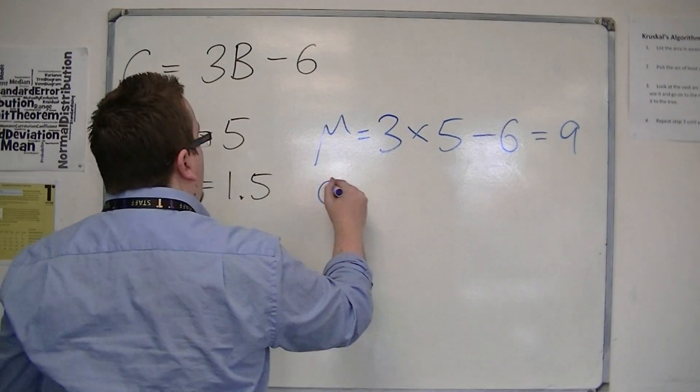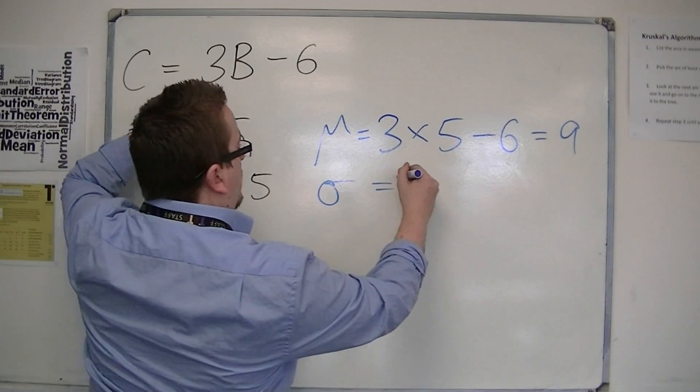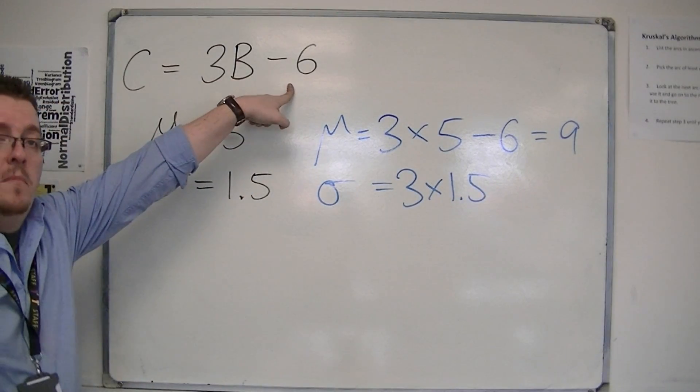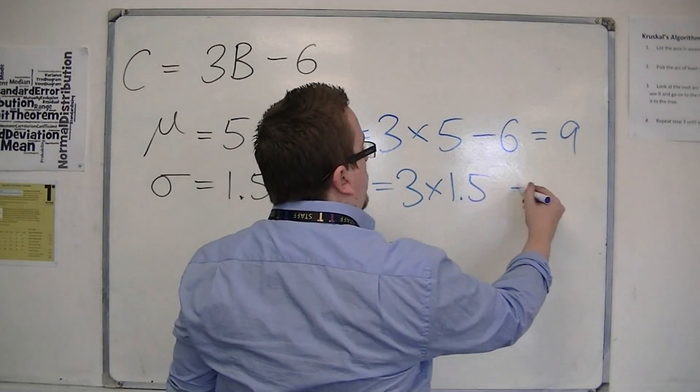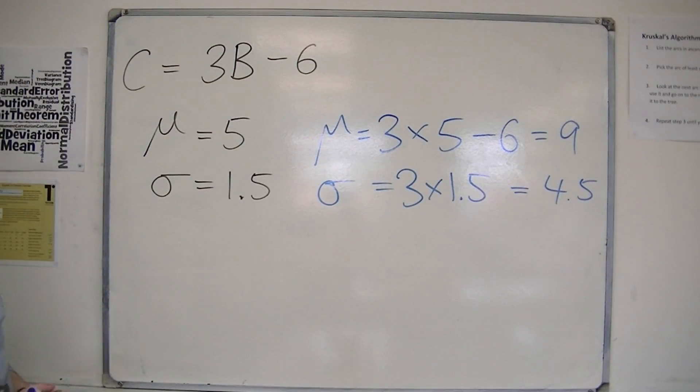The standard deviation will be affected by the three times, but it won't be affected by the minus six. So it will just be three times 1.5, so 4.5. So that's how it can work in practice.